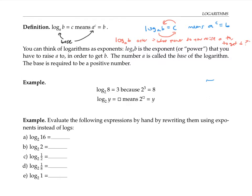Let's look at some examples. Log base two of eight is three, because two to the three equals eight. In general, log base two of y is asking the question: what power do you have to raise two to, to get y? For example, log base two of 16 is four, because it's asking two to what power equals 16, and the answer is four.